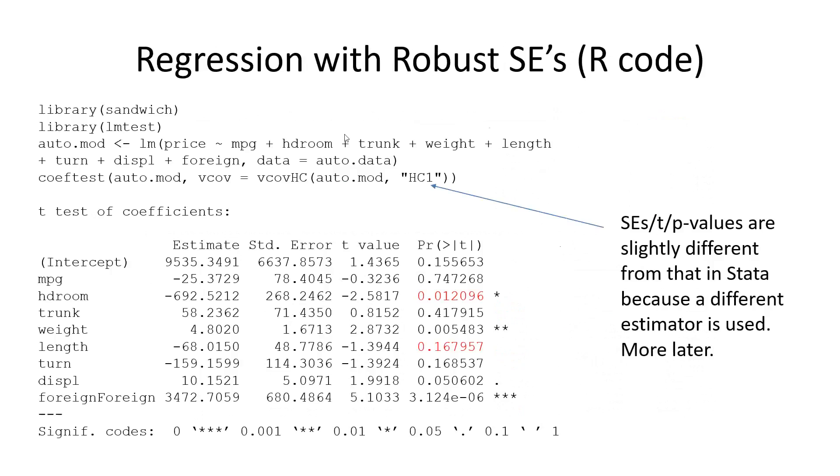Now, in R, you specify the same thing as shown here. R uses just a slightly different estimate of the variance of the no-assumption variance-covariance matrix than Stata does. And I have a slide in the next section on what the differences are. The differences are minor.